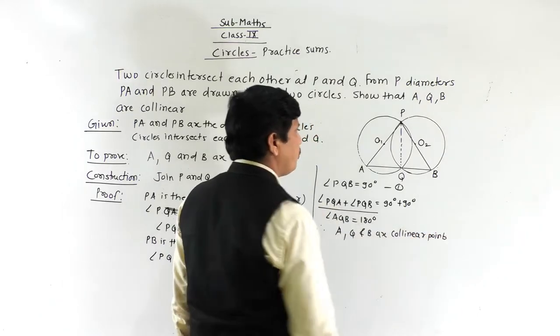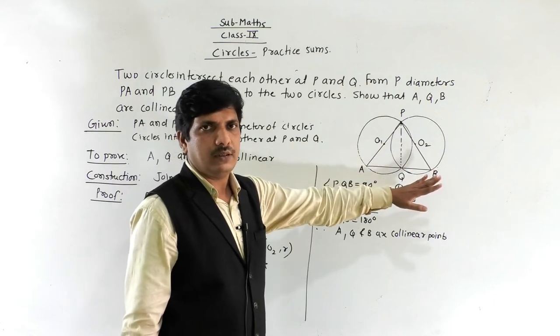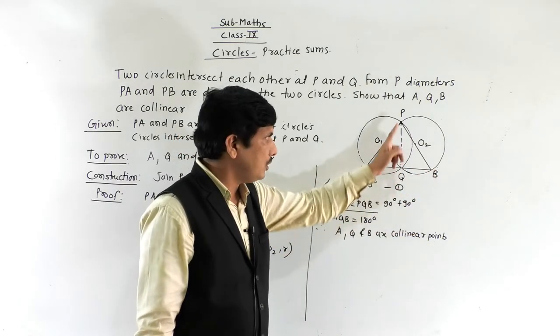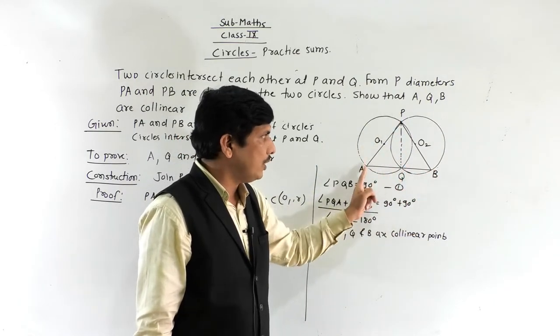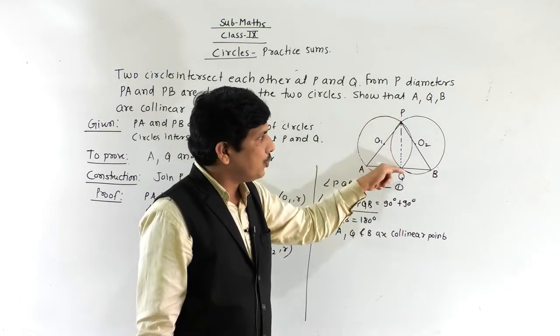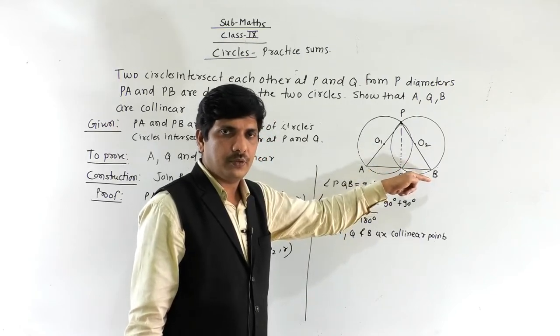The property used here is that angles in a semicircle are always right angles. Angle PQA is 90 degrees and angle PQB is also 90 degrees, so A, Q, B are collinear.